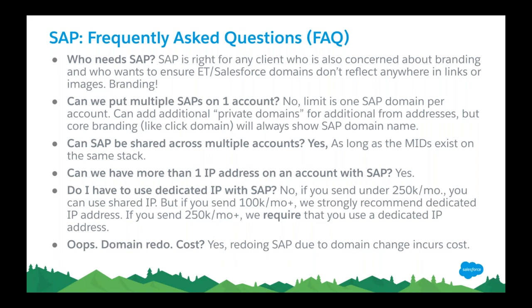With Sender Authentication Package, you either have it included with your edition or purchase it separately, fill out the form, and we set up the domain name for you. Either we host the domain's DNS via subdomain delegation — where a DNS setting delegates that subdomain out to Salesforce and we host all that DNS for you — or if some companies can't support that, we give the client all ~20 DNS entries and say here's the mapping you need to copy and paste into your DNS setup tool. Either way you get everything branded as the client and authenticated with email authentication.